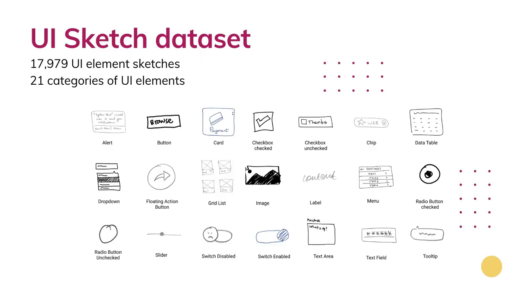The UISketch dataset is the first large-scale dataset of 17,979 hand-drawn sketches of 21 UI element categories, collected from 967 participants including UI/UX designers, front-end developers, and HCI and CS grad students from 10 different countries. Before delving into the details of this paper, I would like to establish some background on this area of research.